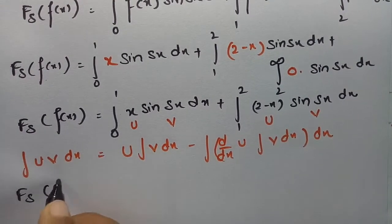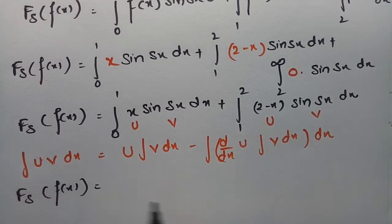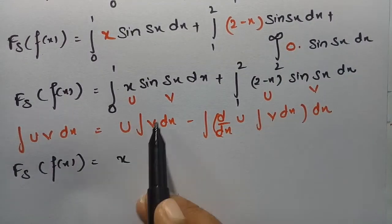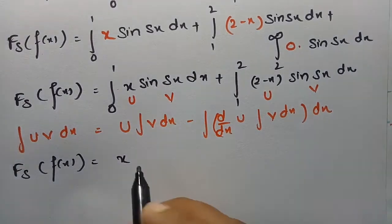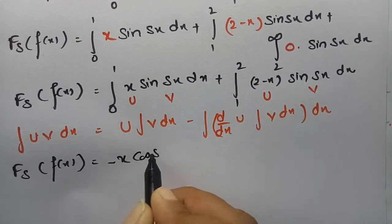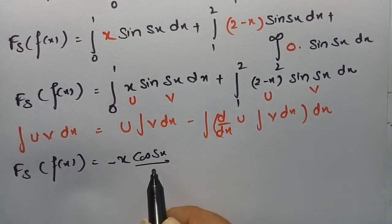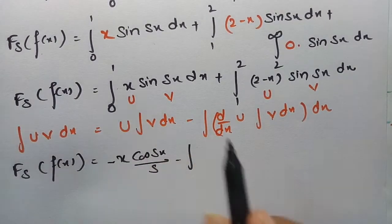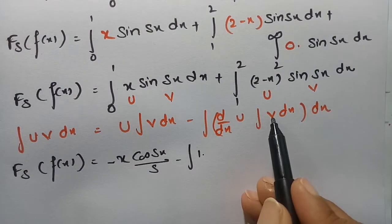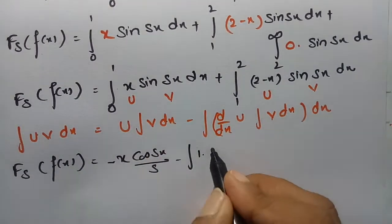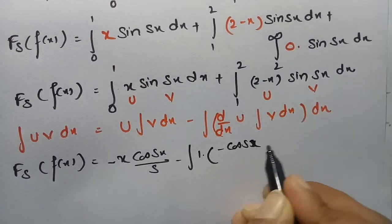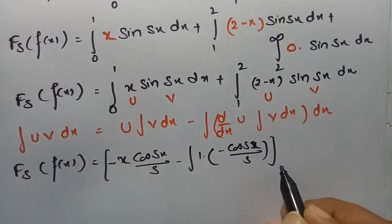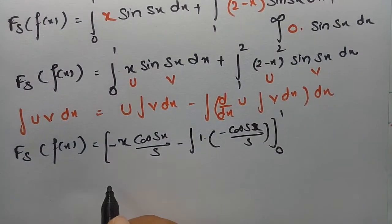Applying integration by parts to the first integral: u = x is left as is, and v = sin(sx) is integrated to give minus cos(sx)/s. So the first part gives x times (minus cos(sx)/s), evaluated from 0 to 1. Then minus the integral of the derivative of u (which is 1) times (minus cos(sx)/s) dx, also from 0 to 1.